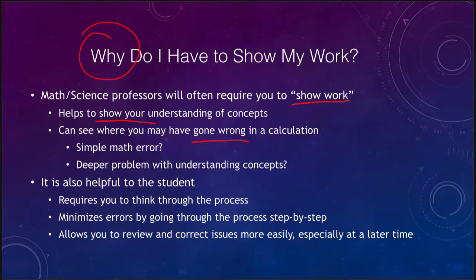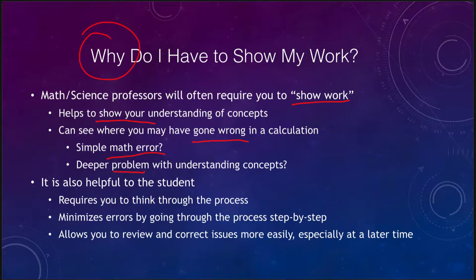When your professor is reviewing it, if all they see is a wrong answer, all they know is that you did something wrong, but they don't know what and have no way to give you any feedback other than that it's wrong. Sometimes it's a very simple math error — you typed the wrong number into your calculator — or is it a deeper problem with understanding the concepts? It helps the professor see what you might have done wrong, and it's also helpful for the student because it requires you to think through the process, which will minimize errors.